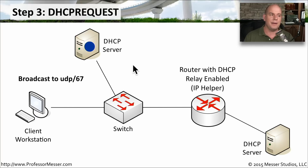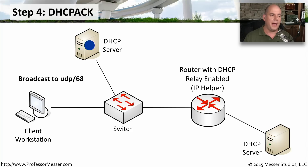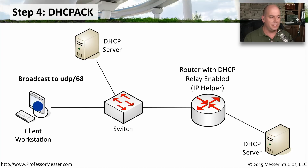The last step is for the DHCP server to acknowledge that it received that request. It sends a broadcast on UDP port 68 back to everybody on the network, and especially the client workstation that originally sent the request. Now the client workstation knows the IP address has been marked as owned by it, and the IP address configuration can be set so it can begin using the network normally.